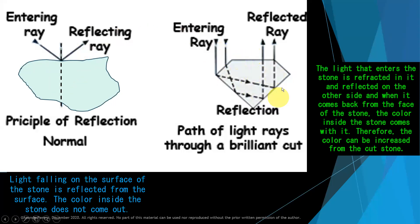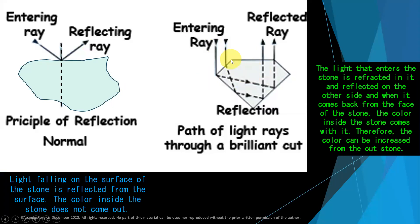Now look at this cut and polished stone. The entering ray goes through the stone and is reflected from the pavilion facets, then reflects through the table of the stone. The entering ray mixes with the color inside the stone and reflects the gemstone's inner color and beauty. So we can see the beauty of the stone with cut and polished gemstones, but with a rough stone, nothing. This is the main difference between the two stones.